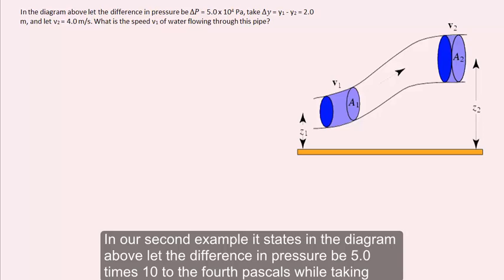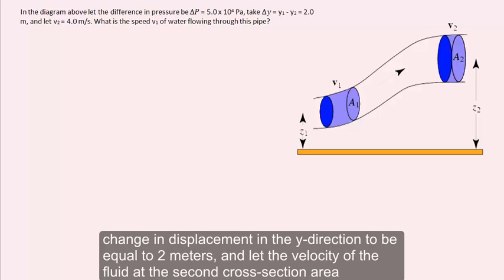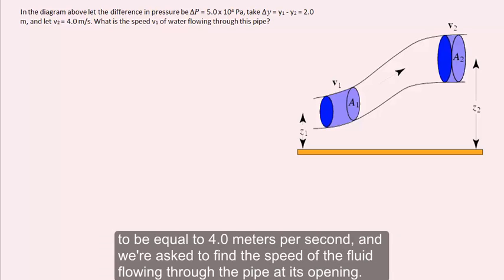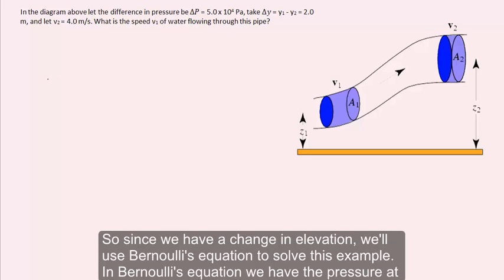Our second example states: in the diagram, the difference in pressure is 5.0 × 10⁴ pascals, the change in displacement in the y-direction is 2 meters, and the velocity of the fluid at the second cross-sectional area is 4.0 meters per second. We are asked to find the speed of the fluid at the pipe's opening. Since there is a change in elevation, we will use Bernoulli's equation.